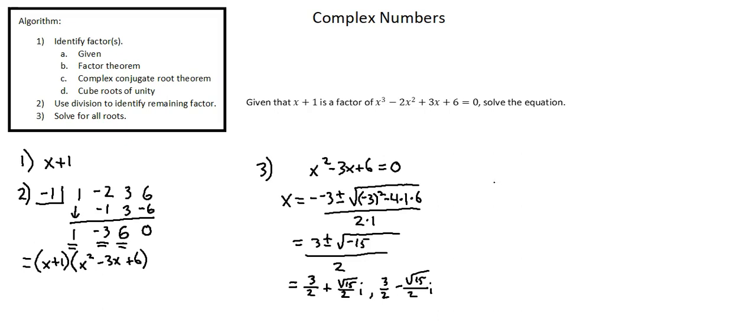and now going back to x plus 1 as the source of an additional solution, x plus 1 equals 0 means that x equals negative 1. This comes down as our third solution, negative 1.